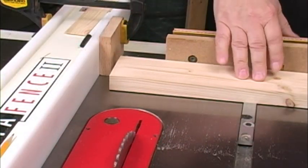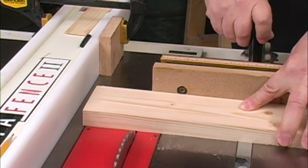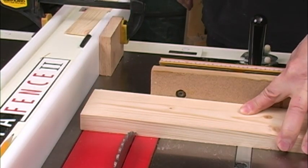The gauge block lets us bump the wood against it to set the length, but then when we move it forward to make the cut, it goes off of the gauge block and leaves a gap between the wood and the fence that eliminates that kickback potential.